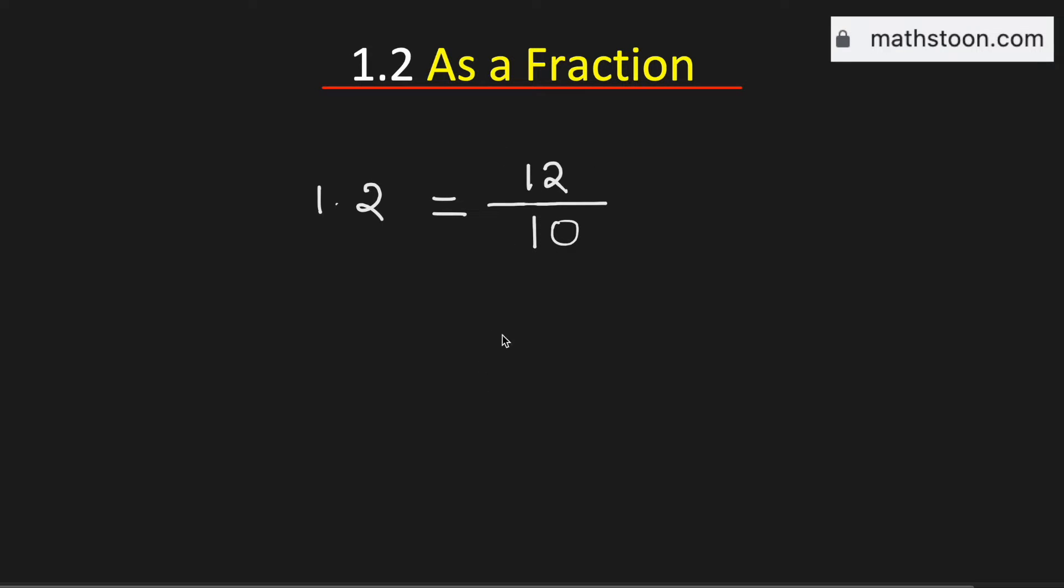Now we will simplify it. We know that 12 can be written as 2 times 6, and 10 can be written as 2 times 5. So we can cancel these two.